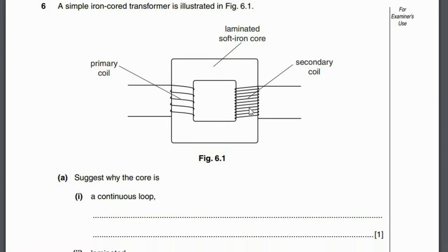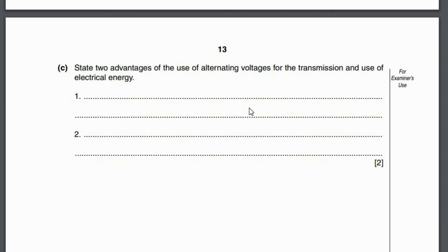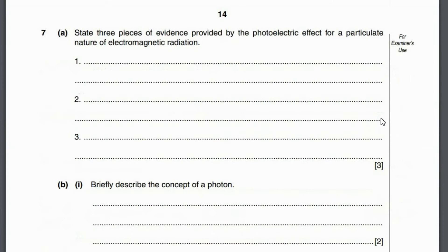State two advantages of using alternating voltage for transmission of electrical energy. First, step-up transformers increase the voltage and decrease the current, reducing power loss in the transmission lines. Second, it is easy to transform or vary voltages to any desired value using transformers.